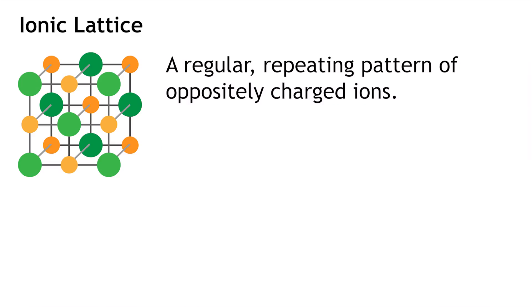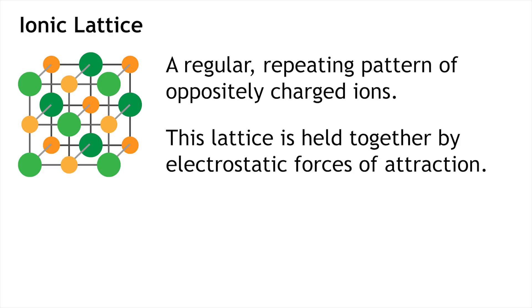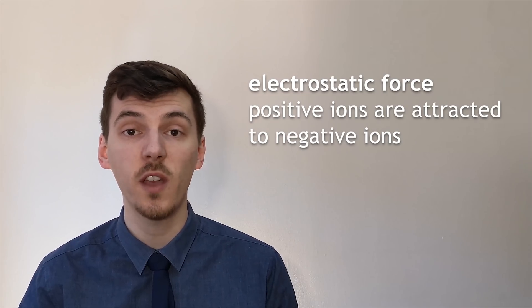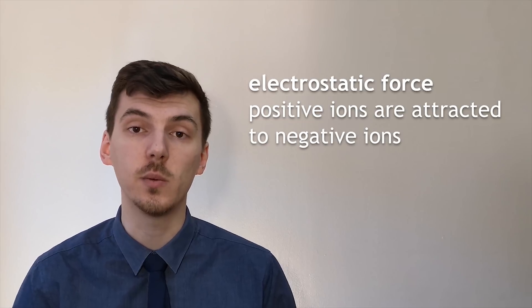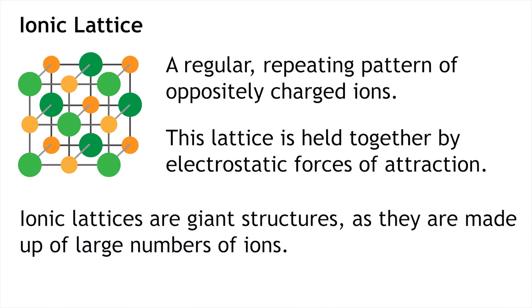Drawing dot and cross diagrams for ionic compounds isn't a very accurate representation of how ionic compounds exist. Ionic compounds are made up of giant lattice structures of repeating ions - positive negative positive negative - held together by an electrostatic force of attraction. That just means that the positive and the negative are attracted to each other. These structures are referred to as giant structures as they contain large numbers of ions held together.